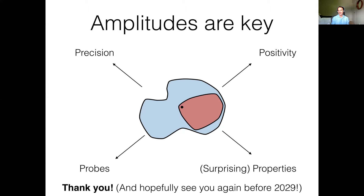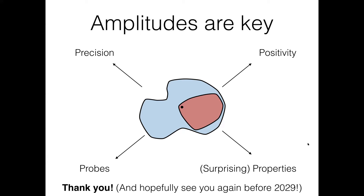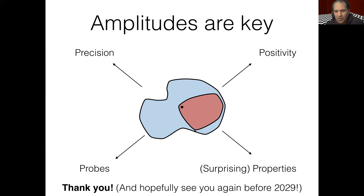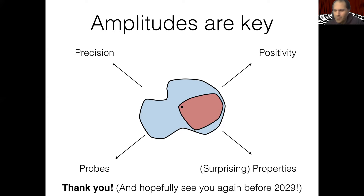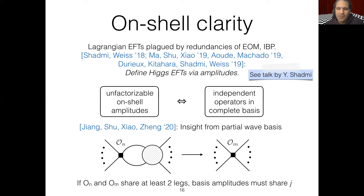Great. Thank you, Nathaniel. Thank you for the great talk. Now we have time for questions. Can I ask a question? It's Nima. Go ahead. Can I ask a simple question about the zeros? So this has to have a one-line explanation, but I'm just wondering how you'd say it in purely on-shell language. Like the H-dagger H cubed operator — doesn't that renormalize the D H-dagger H squared operator at one loop? And that's kind of totally obvious from just staring at the diagram because there's no place to get those momenta. But how would you say that? Is that phrased in a helicity selection language or not?